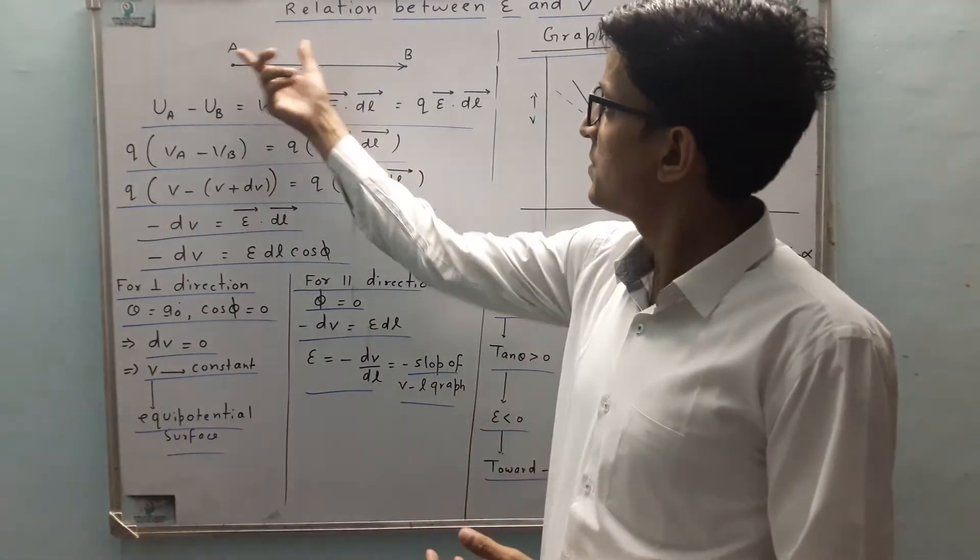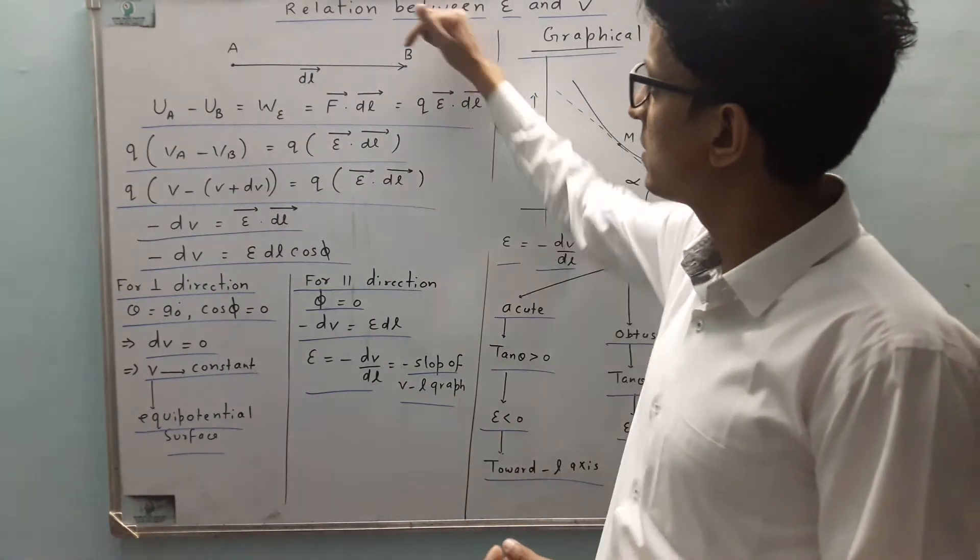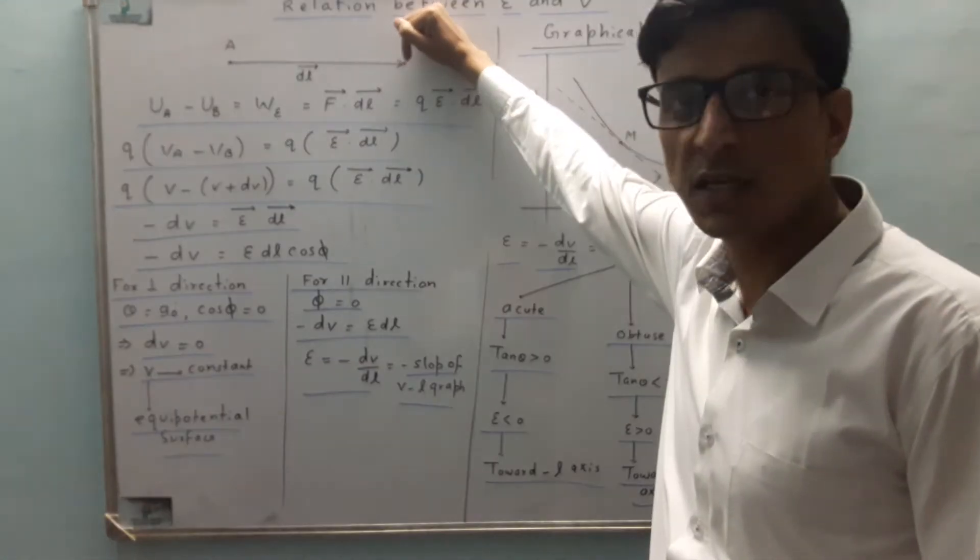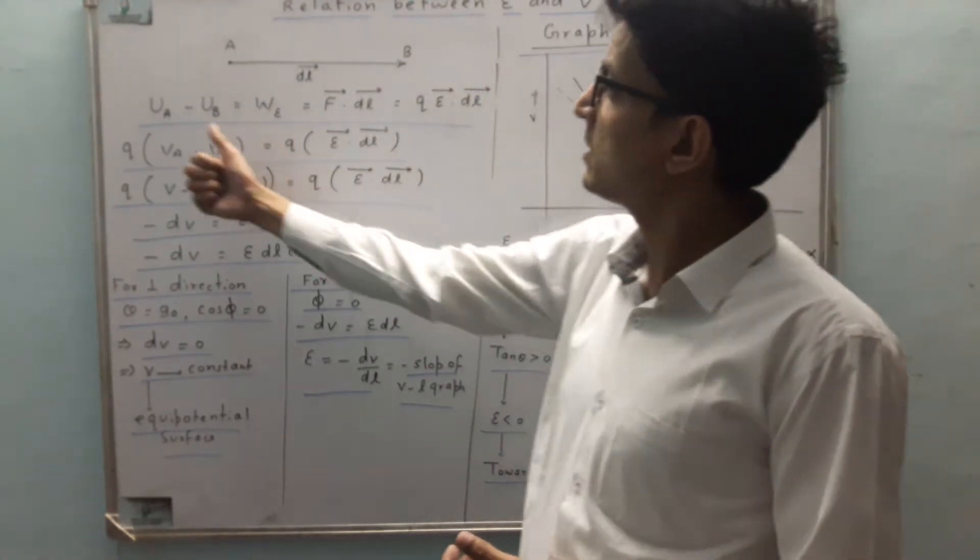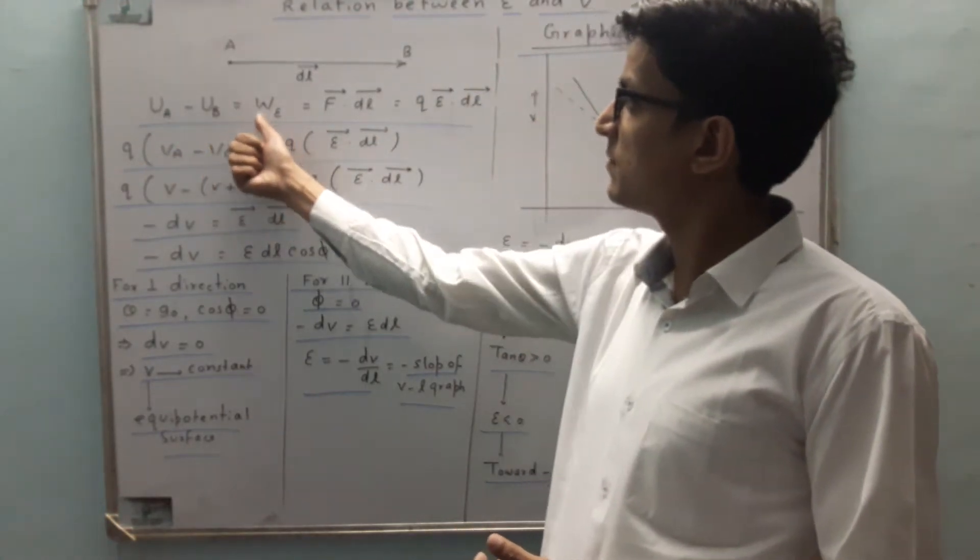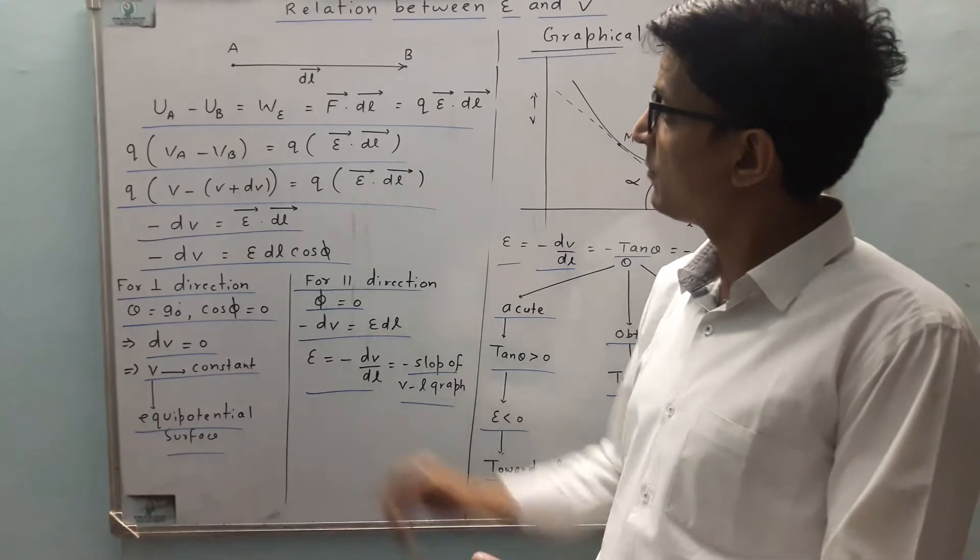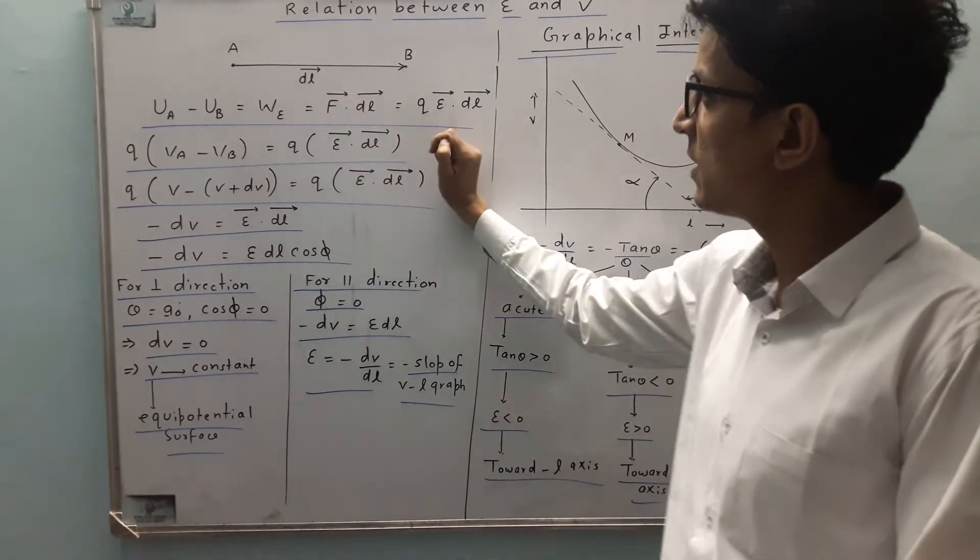There are two points A and D. The displacement between these is vector DL. We have the difference of potential energy as the work done by electric field. Work done by electric field is F dot DL.